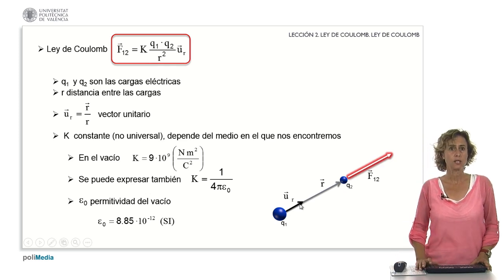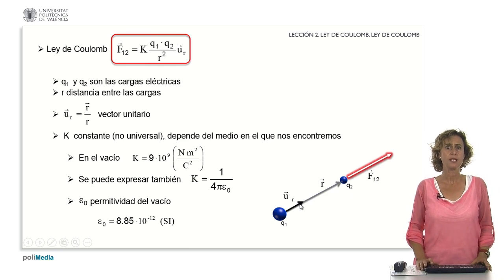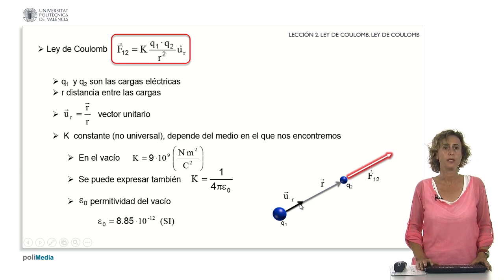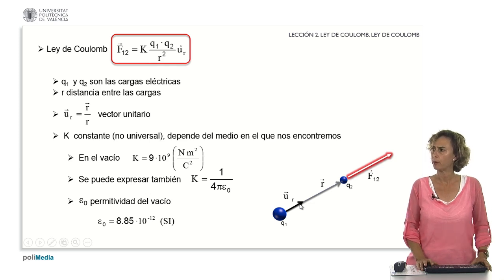k is a constant that is not universal, and depends on the medium in which we are. In the case of vacuum, it has a value of 9 times 10 raised to 9 newtons squared meters squared coulomb squared. It can also be expressed as 1 divided by 4 pi epsilon sub 0, being epsilon sub 0, the vacuum permittivity, which has a value in units of the international system of 8.85 times 10 raised to minus 12.